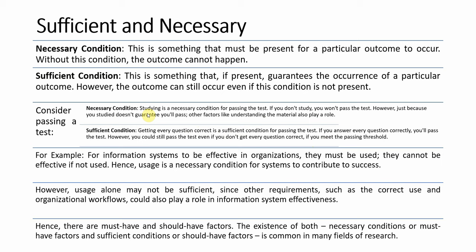So studying is a Necessary Condition. Another example: for information systems to be effective in an organization, they must be used. Usage is a Necessary Condition for systems to contribute to success. However, usage alone may not be sufficient, since correct use and organizational workflows also play a role. Hence, there are must-have and should-have factors. Necessary Conditions are must-have; Sufficient Conditions are should-have.